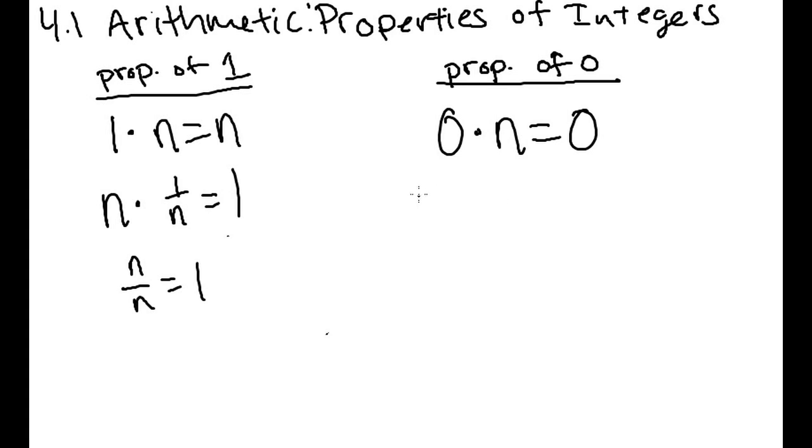Now some other properties of 0 you need to know: n plus 0 is equal to n, because any number when you add 0 to it is just itself. And another one you need to know is n divided by 0 is undefined.